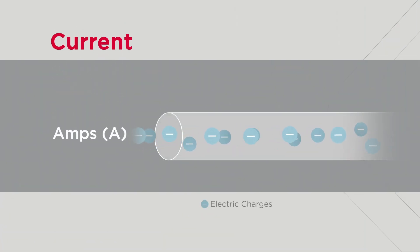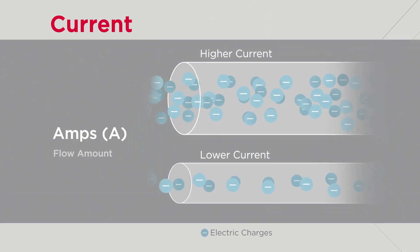Current, measured in amps, indicates the amount of electric charges flowing through the circuit. High or low current determines the thickness of the wire required to handle different flow levels.